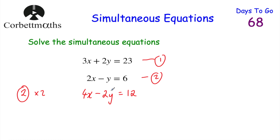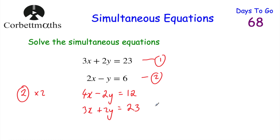So we've got this equation with minus 2y. If we look at our top equation, equation 1, it's got 2y. And minus 2y plus 2y equals 0, so the y's will cancel out — we'll eliminate them. So I'm going to write equation 1 beneath it again: 3x plus 2y equals 23. Then I'm going to add these two equations together because the y's will cancel.